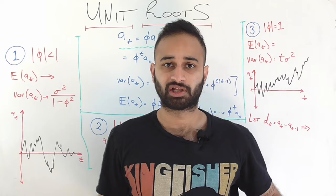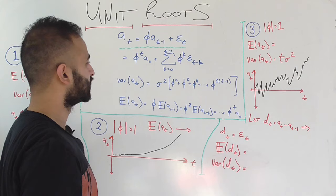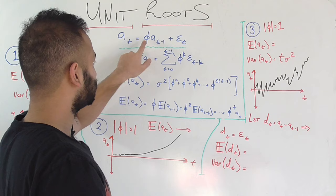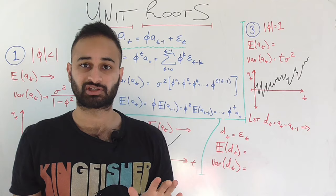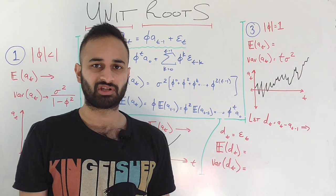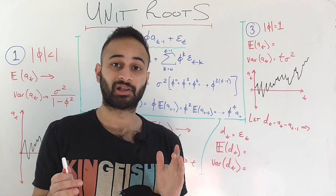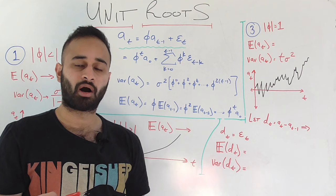Given that high-level overview of unit roots, let's dive into the math. We'll use this simple AR1 model: the time series is modeled as phi times the one-lag version of the time series, plus an error term epsilon sub t. This whole video is focused on what different values phi can take — is it higher than 1, lower than 1, or equal to 1? We'll talk about all three cases and what they imply for the stationarity of the time series.